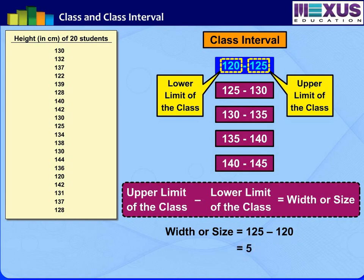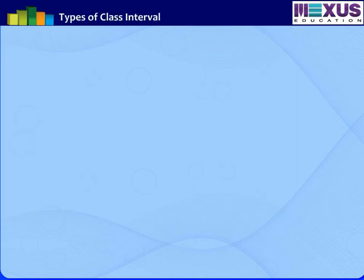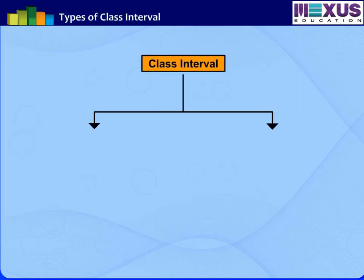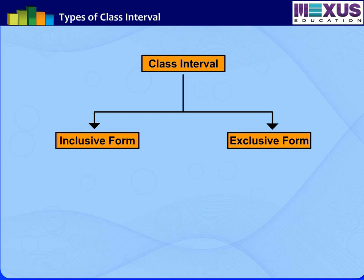By increasing the class interval, we can reduce the number of classes. There are two types of class intervals: inclusive form and exclusive form.